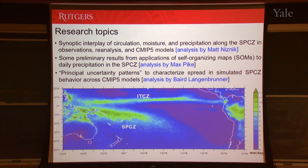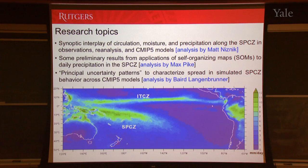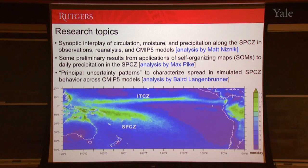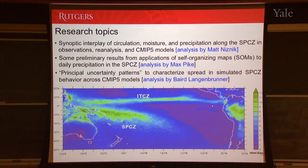I'm going to focus a lot today on the synoptic interplay of circulation, moisture and precipitation along the SPCZ — understanding how it varies in observations, reanalysis, and a current suite of models, the CMIP-5 models. Then some preliminary results that we've been doing, looking at daily precipitation in the SPCZ region using an interesting tool: self-organizing maps.